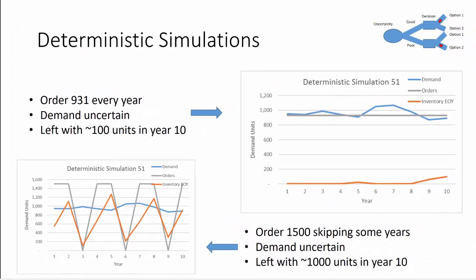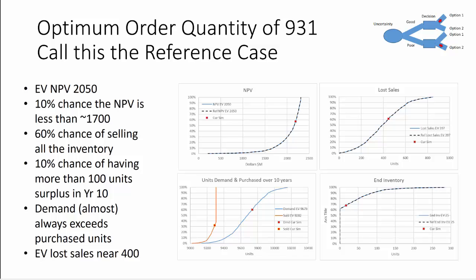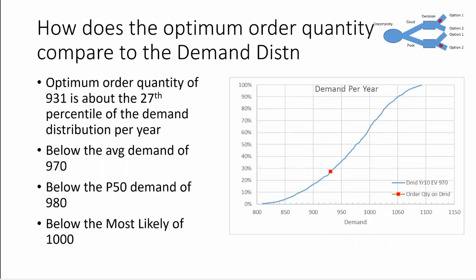So here's the same graphic we saw before with our reference case. So one of the things we might be interested in is how does the optimum order quantity compare to the demand distribution? We've said the optimum order quantity is 931. And that represents about the 27th percentile on the total distribution for demand in any given year. And it's below the average of 970. It's below the P50 of 980. And it's below the most likely of 1000.